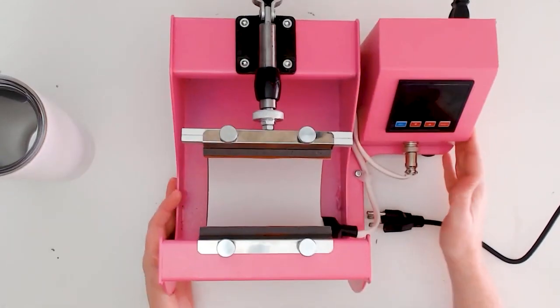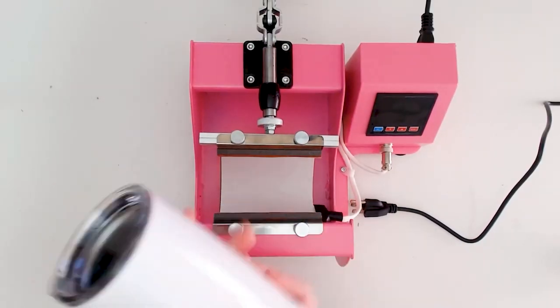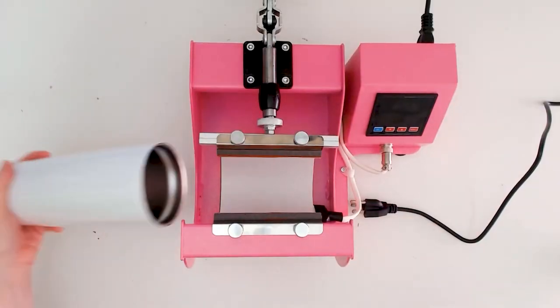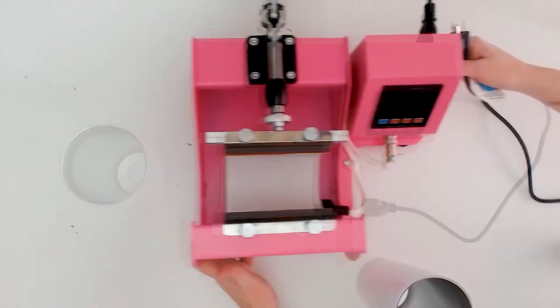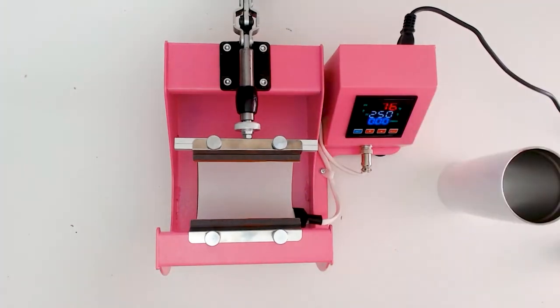Always use your mug press on a flat, sturdy surface. Then check the mug press pressure by placing the mug or tumbler in the mug press, pushing down on the handle. Use the pressure knob to adjust to the correct pressure for your project.